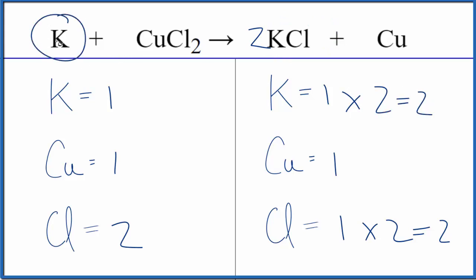Potassium is by itself, so when we change this, it won't change anything else. Let's put a two as our coefficient, one times two. That'll give us two potassium atoms, and we're done. This equation is balanced.